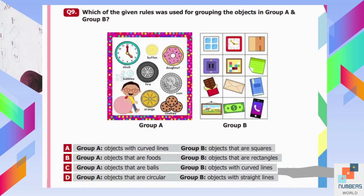Question number nine: Which rule was used for grouping objects in Group A and Group B? Option A says Group A has curved lines, but Group B as squares is not true because there are rectangles too. Option B says Group A are foods, which is not correct. Option C says Group A are balls, not true. Option D says Group A are circular and Group B have straight lines — both true. D is the answer.